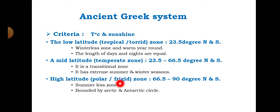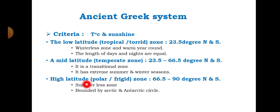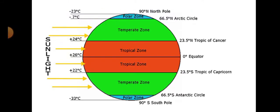The third zone is the high latitude polar or frigid zone, located between 66½° up to 90° north and south — between the Arctic Circle and the North Pole, and the Antarctic Circle and the South Pole. This region is a summerless zone bounded by the Arctic and Antarctic Circles. In summary, ancient Greeks classified world climate into three zones: tropical, temperate, and polar.